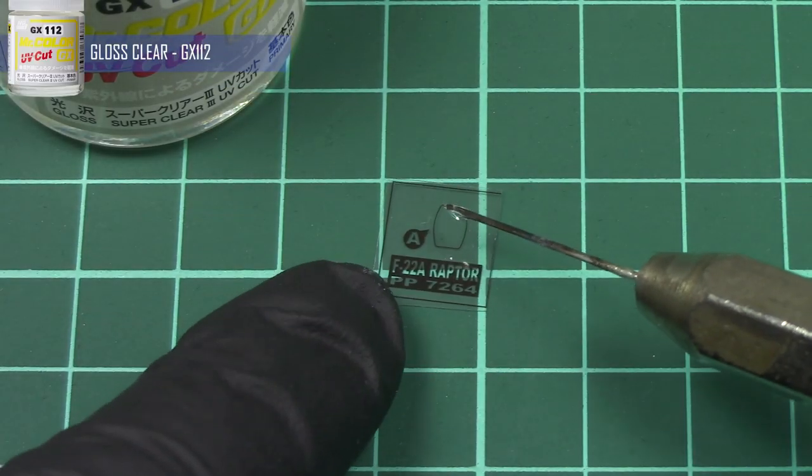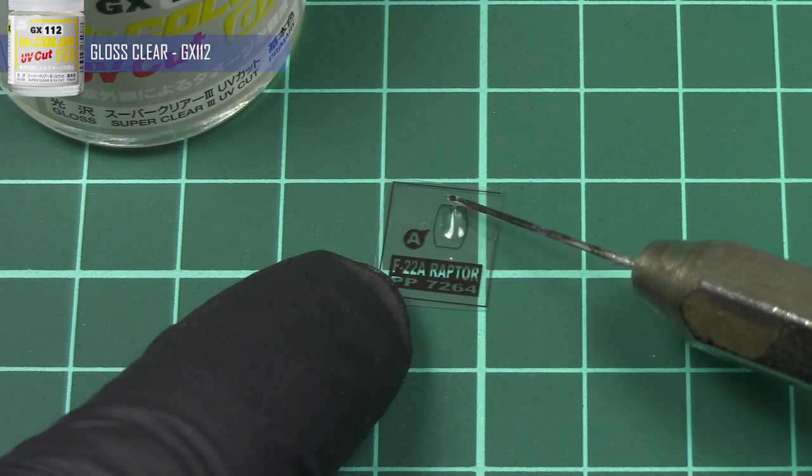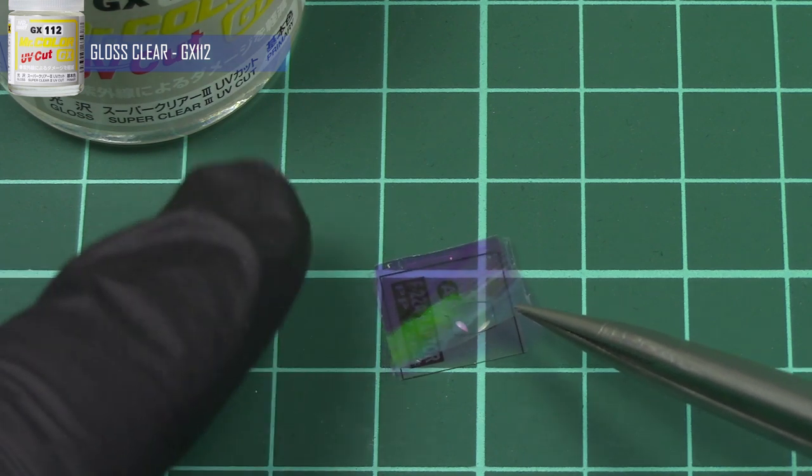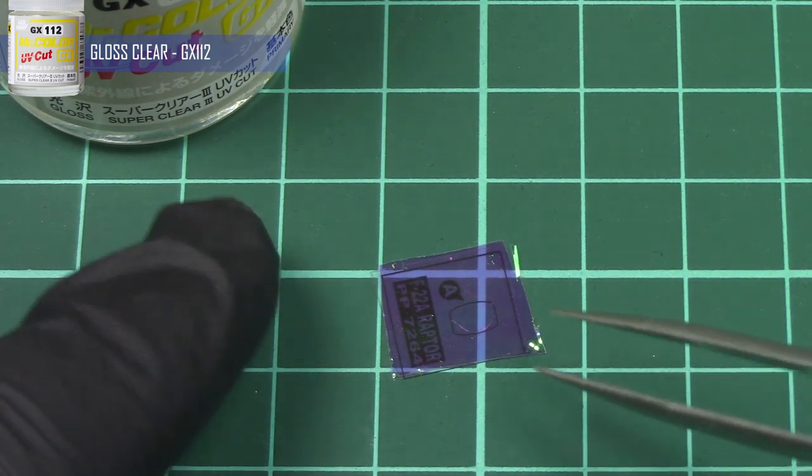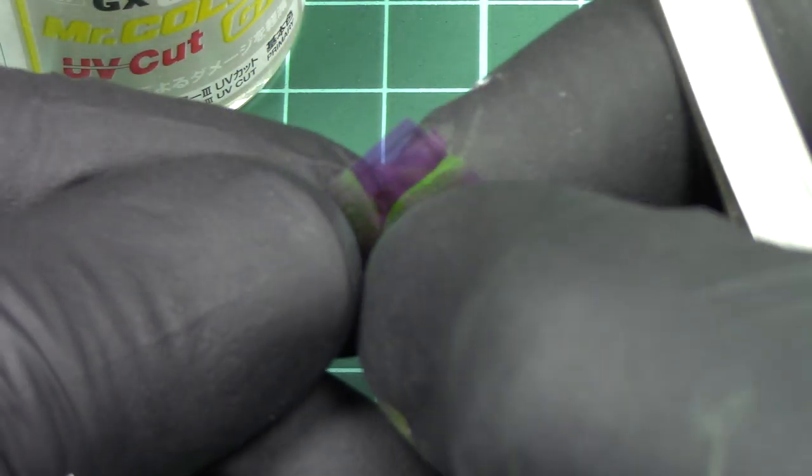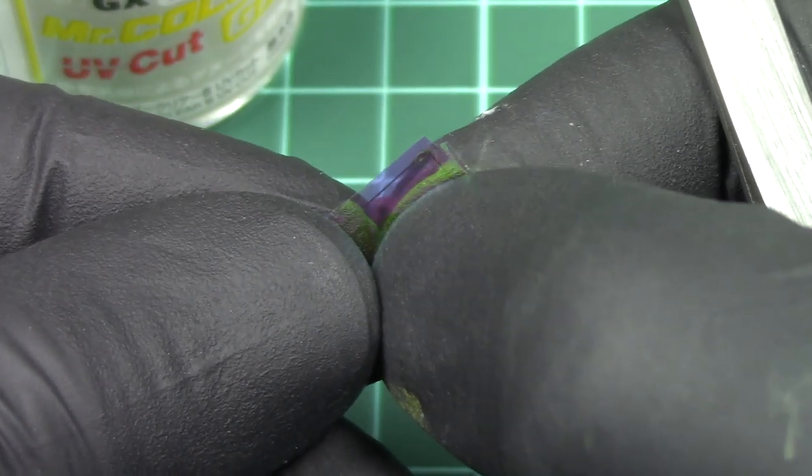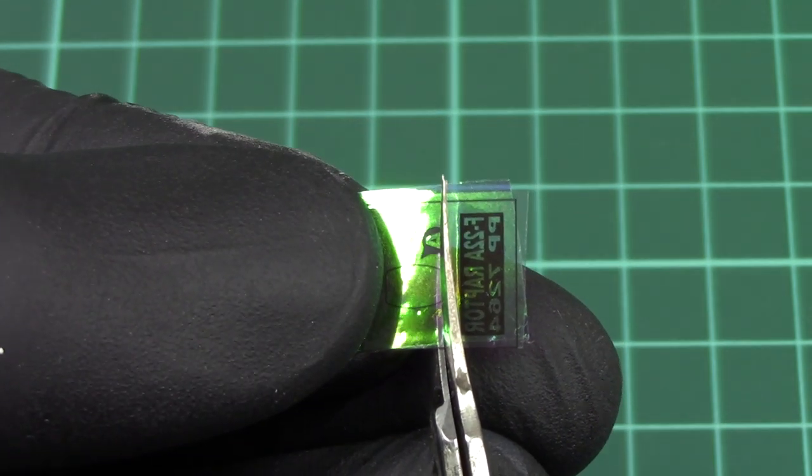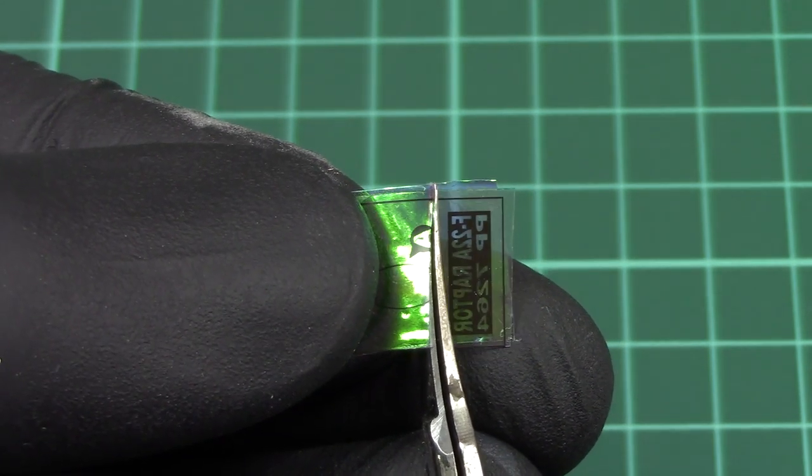As an alternative to the PVA glue you can use gloss varnish. When you have larger acetate and iridescent film glued together it is much easier to cut them to shape than to trim only iridescent film.